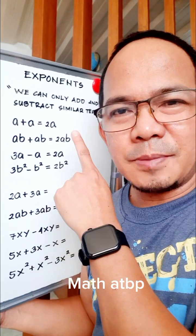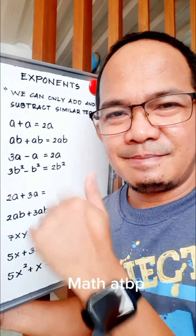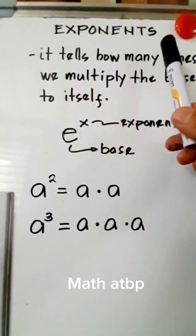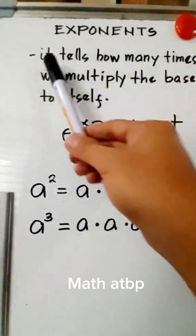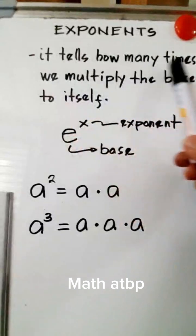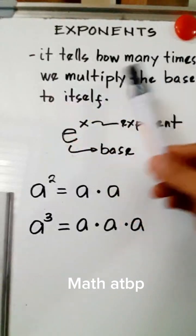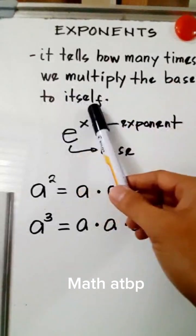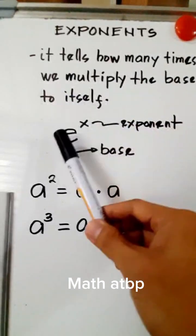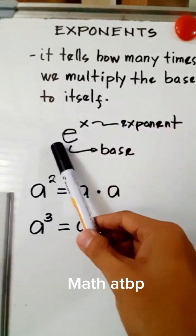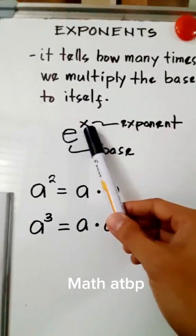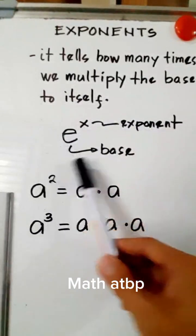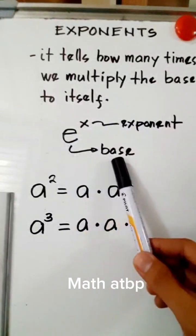Let us now study exponents. An exponent tells how many times we are going to multiply the base by itself. We have here e raised to x — x is your exponent while e is your base.